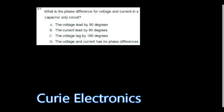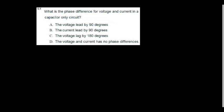What is the phase for voltage and current in the capacitor only circuit? In the capacitor circuit the current leads by 90 degrees. This is all very simple questions.